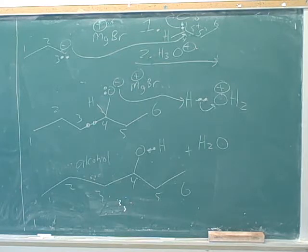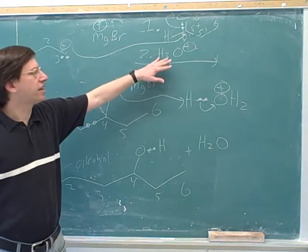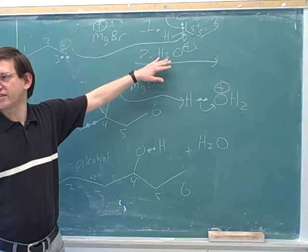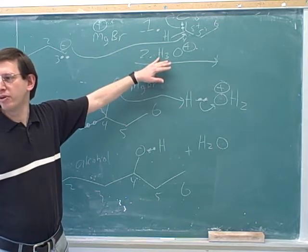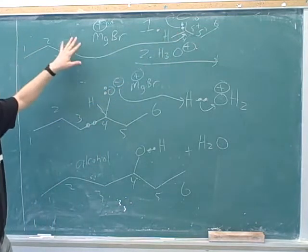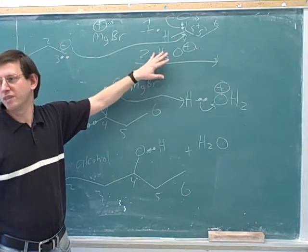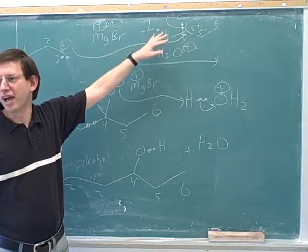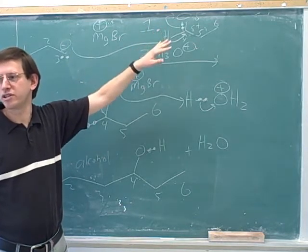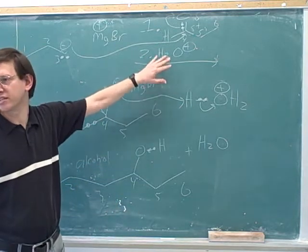So there are still some important points to keep going with the hydroxy here. Why was it important that we added the hydronium as a second step? Because remember, if the hydronium had been added at the same time as the aldehyde, the Grignard would react with the hydronium instead of reacting with the aldehyde. So if you want to attack a carbonyl, you have to add the protonation in the second step.